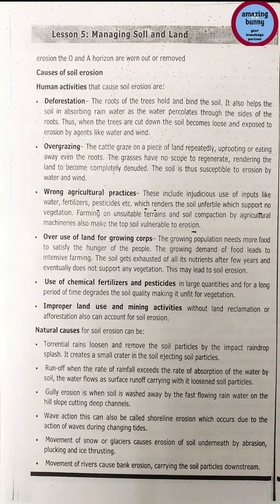Natural causes of soil erosion: torrential rains loosen and remove soil particles by the impact of raindrop splash, creating small craters in the soil and ejecting soil particles. Runoff occurs when the rate of rainfall exceeds the rate of absorption of water by soil, with the water flowing as surface runoff carrying loosened soil particles. Gully erosion occurs when soil is washed away by fast-flowing rain water on hill slopes, cutting deep channels.